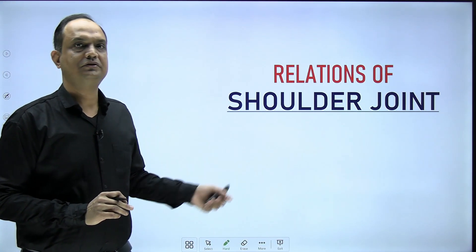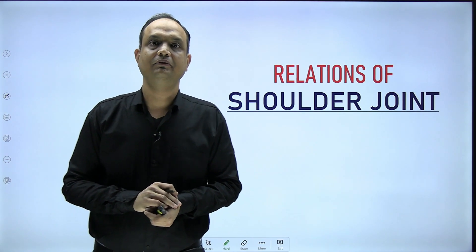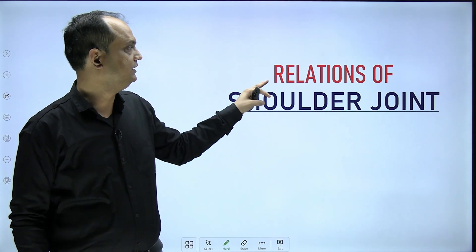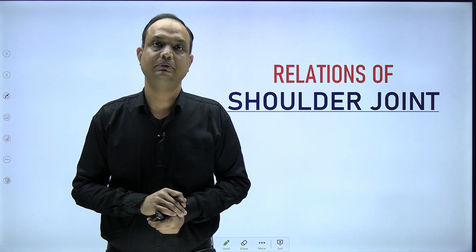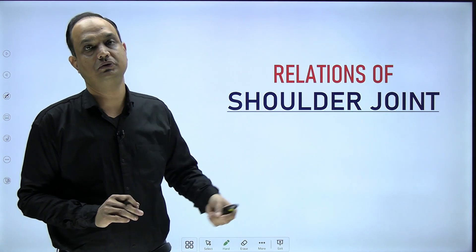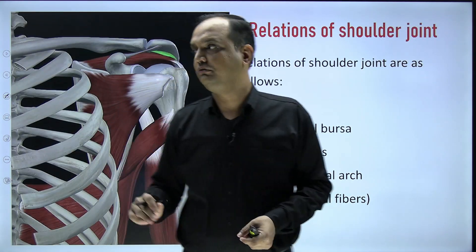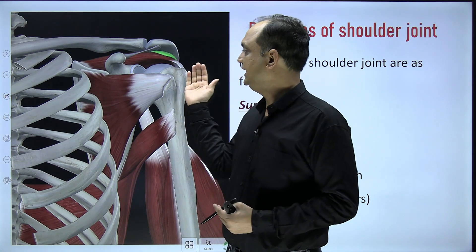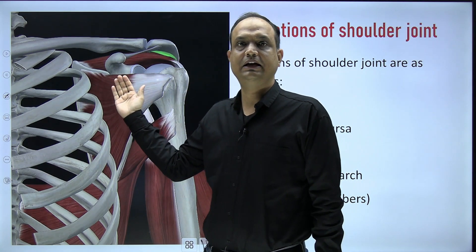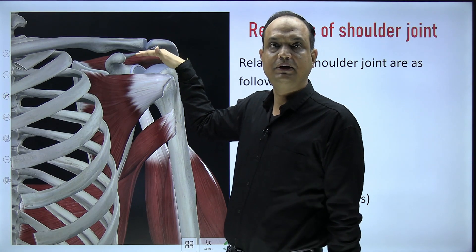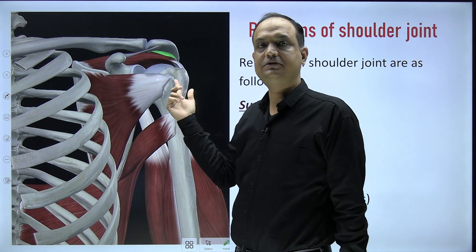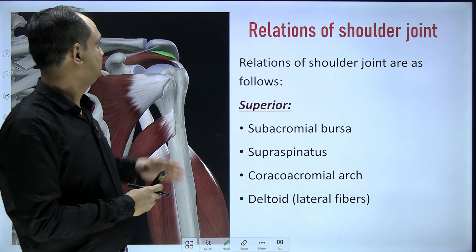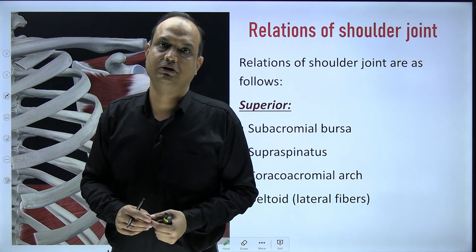Hello students, in the continuation of the shoulder joint lectures, today we'll discuss the relations of the shoulder joint. This question appears in your exam: write down the relations of the shoulder joint and draw the labelled diagram. The shoulder joint is surrounded by muscles and bursae. We have anterior, superior, posterior, and inferior relations.